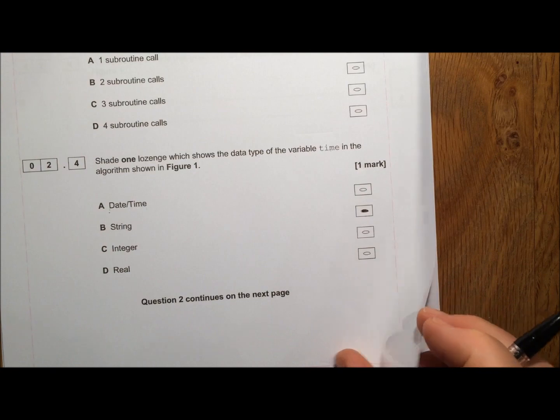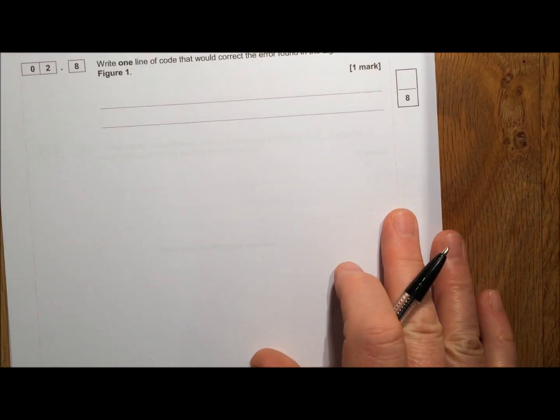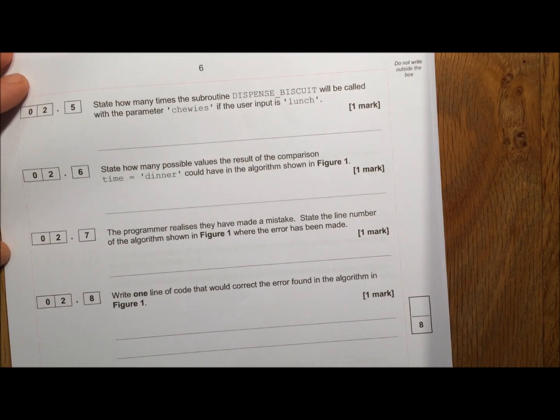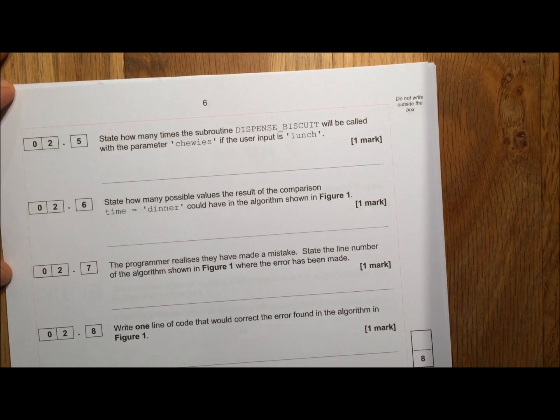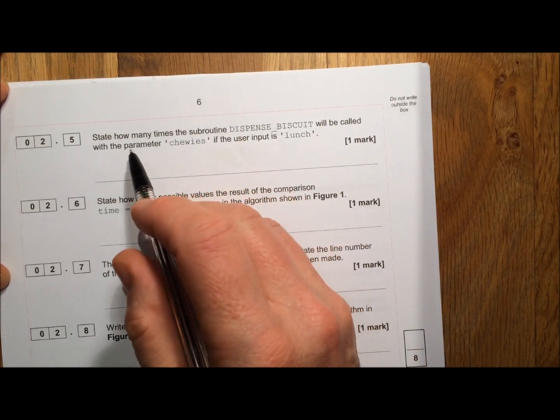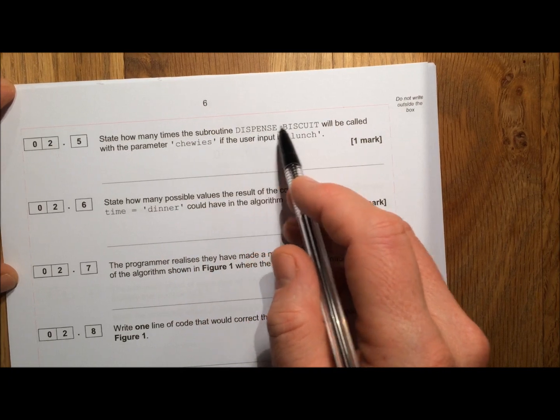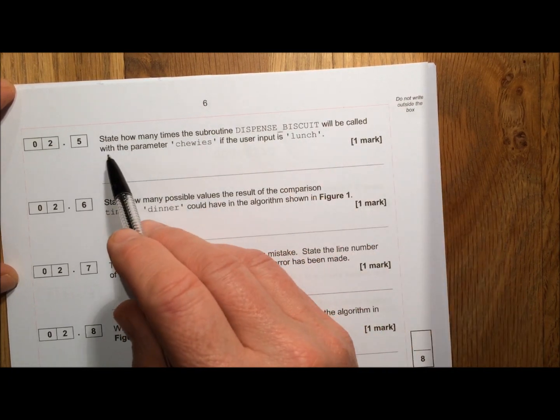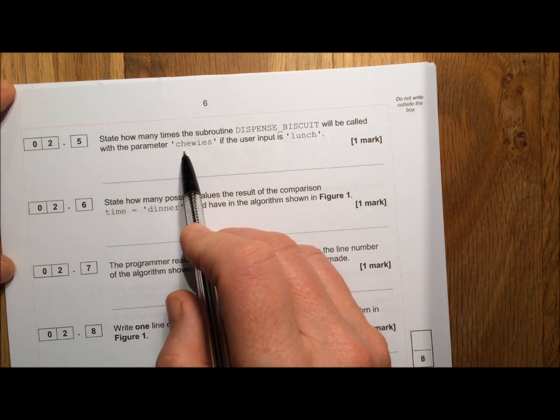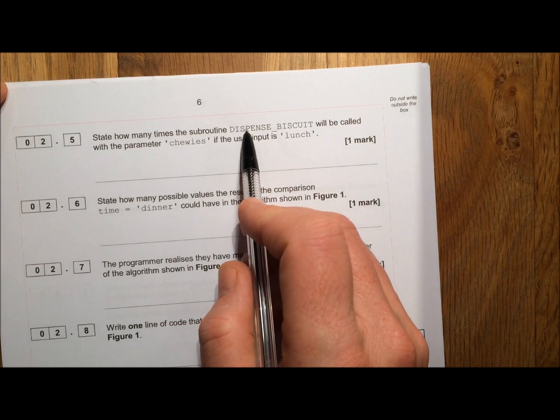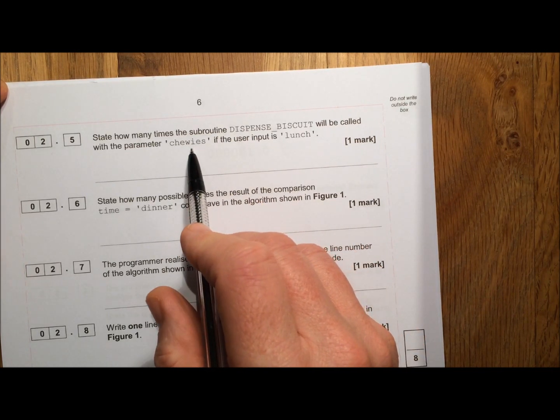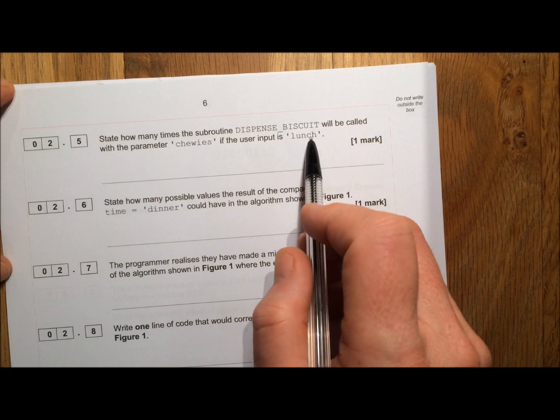Let's move on. Now we're going to move away from the multiple choice type questions. And the first question we get here states how many times the subroutine dispense biscuit will be called with the parameter chewies. So only when dispense biscuit has chewies after it, if the user input is lunch.